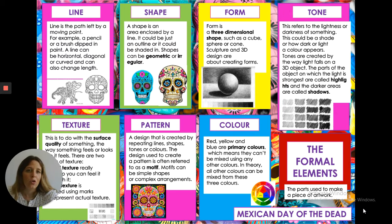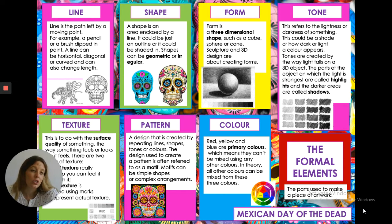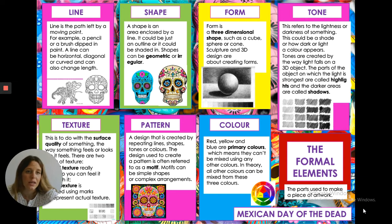Think about the form — think about how you're going to make it look three-dimensional, how you're going to make it look like it's a sculpture. Think about tone as well, how you're going to make areas darker, how you're going to make areas lighter, to help it look 3D.